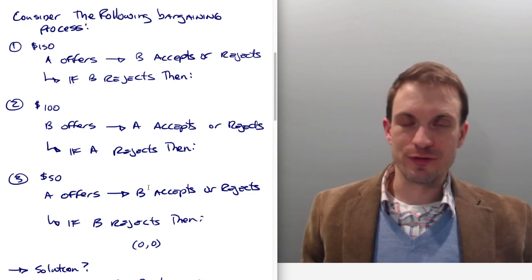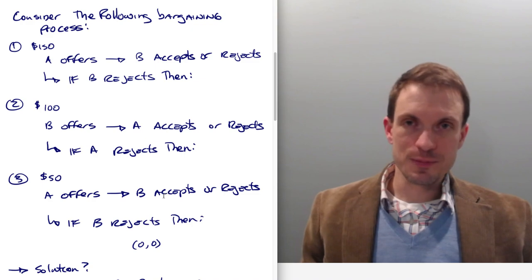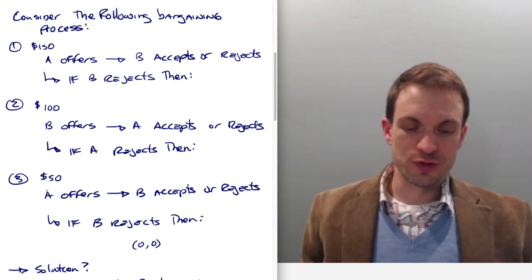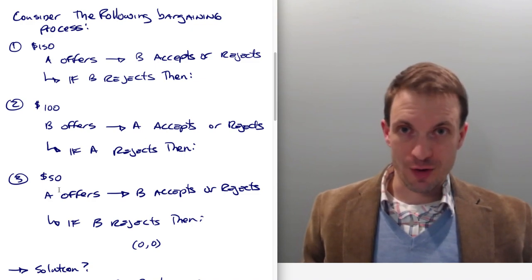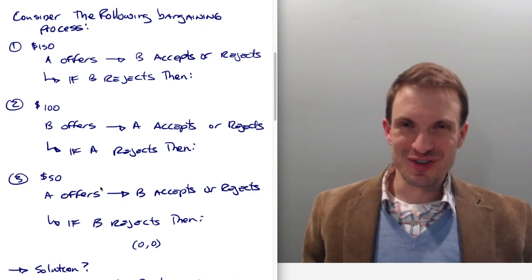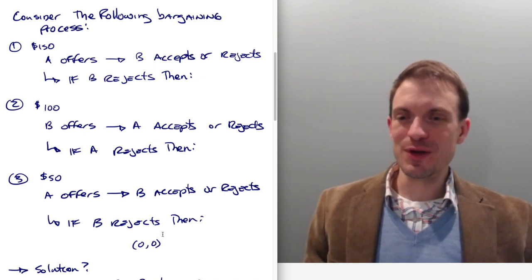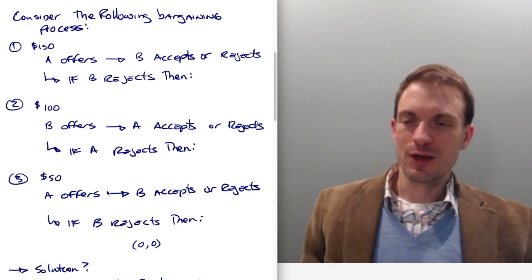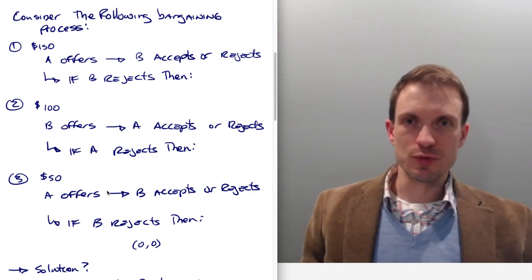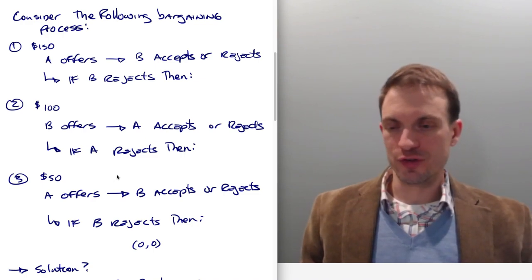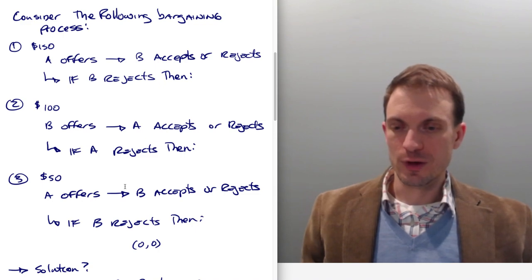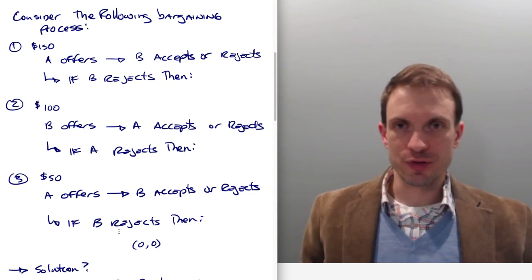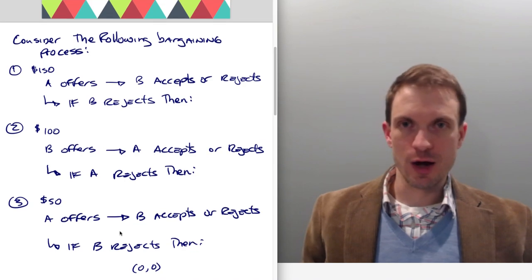And A is going to make an offer that B is going to accept or reject. If B accepts, the surplus is distributed according to how A has stipulated. If B rejects, they both get nothing. So B rejects, they both get zero. Actually, in the last period of these games, we essentially have a take it or leave it ultimatum game. Anyway, so that gives us some clues into thinking about the solution, how this actually ought to play out.